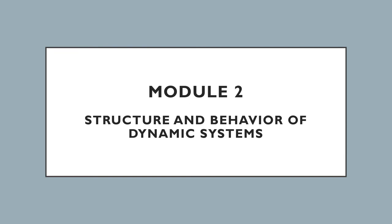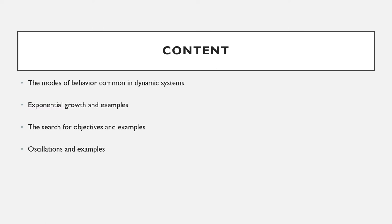In this second module, you're going to learn about structure and behavior of dynamic systems. The objective of this module is to help you understand the modes of behavior common in dynamic systems, which is an essential element in the modeling process.